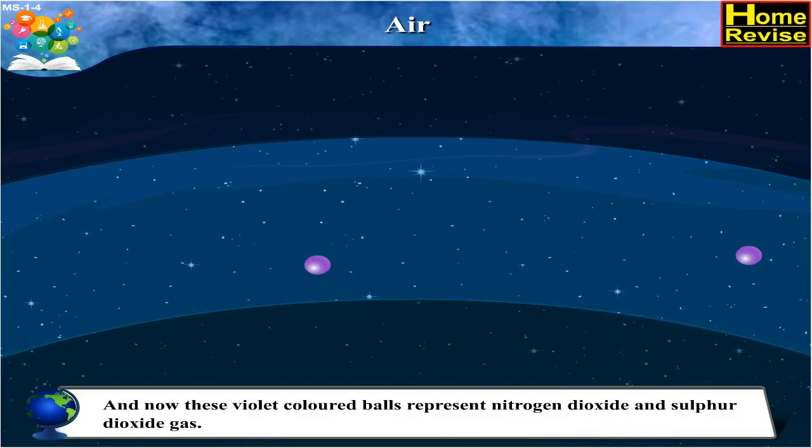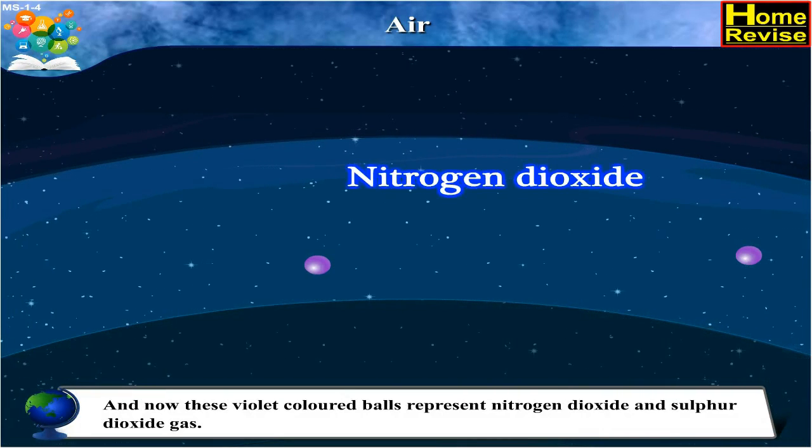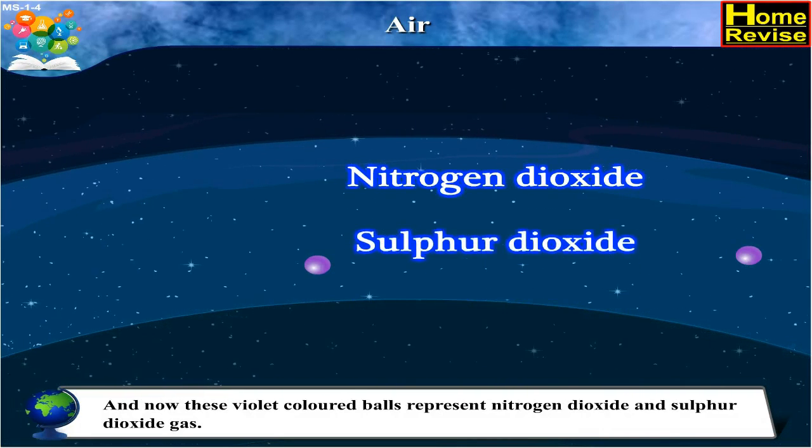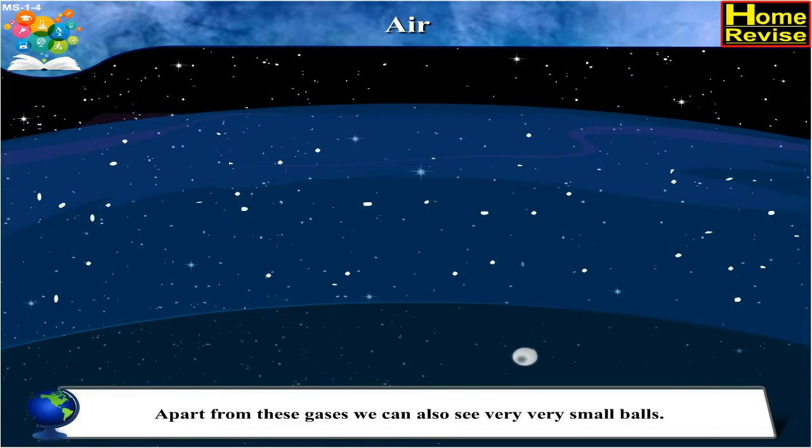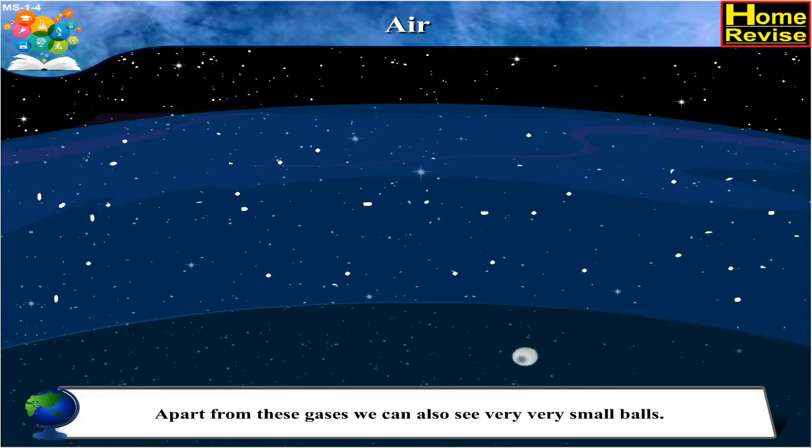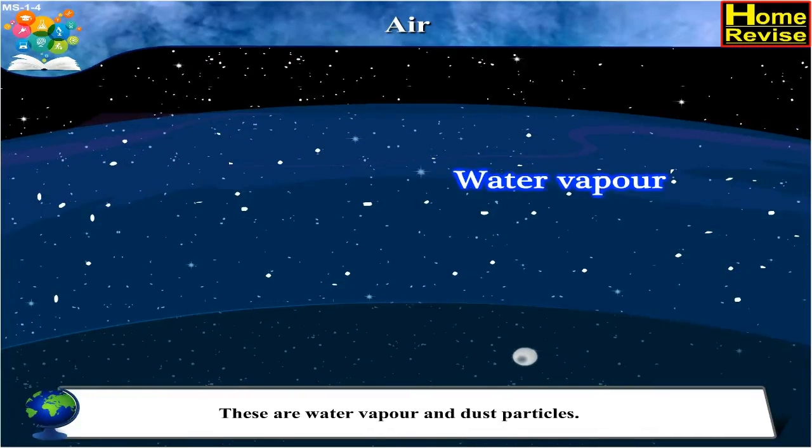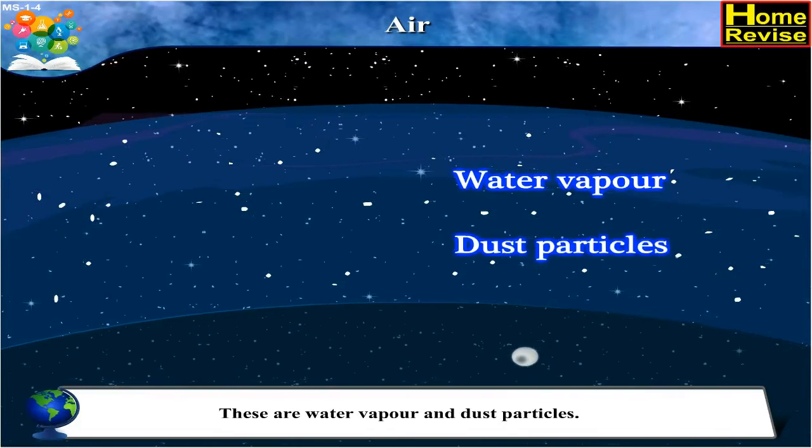And now, these violet colored balls represent nitrogen dioxide and sulfur dioxide gas. Apart from these gases, we can also see very, very small balls. These are water vapor and dust particles.